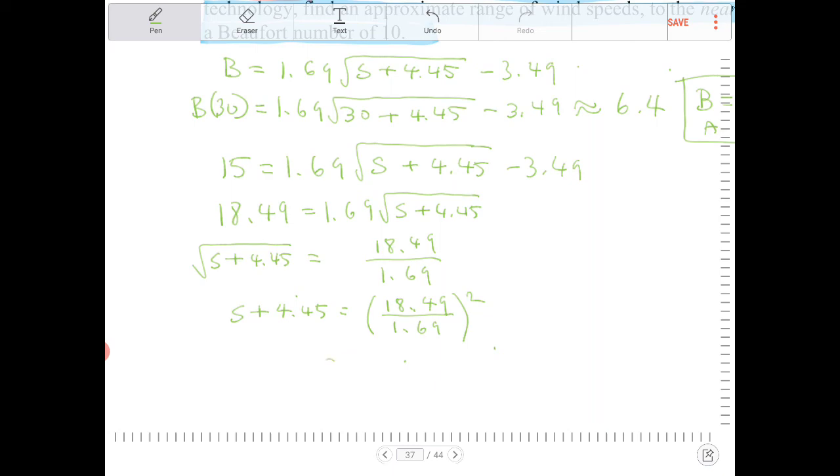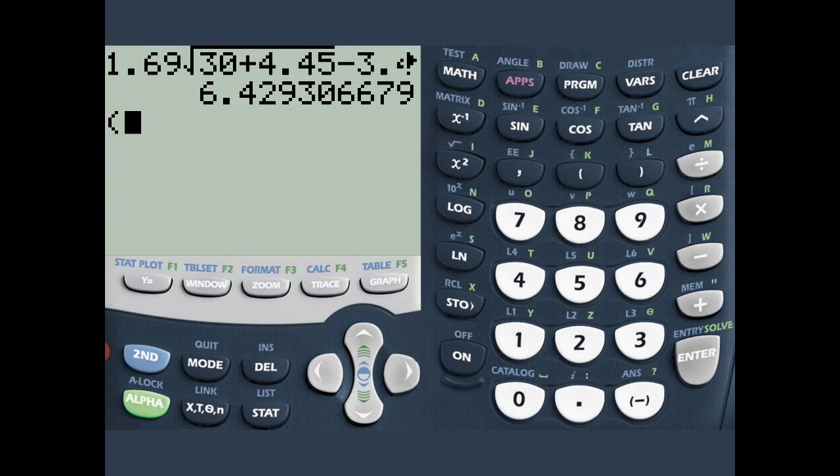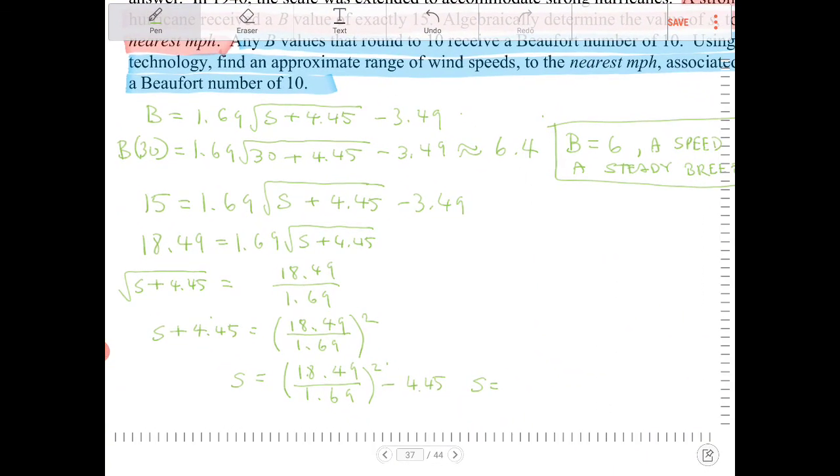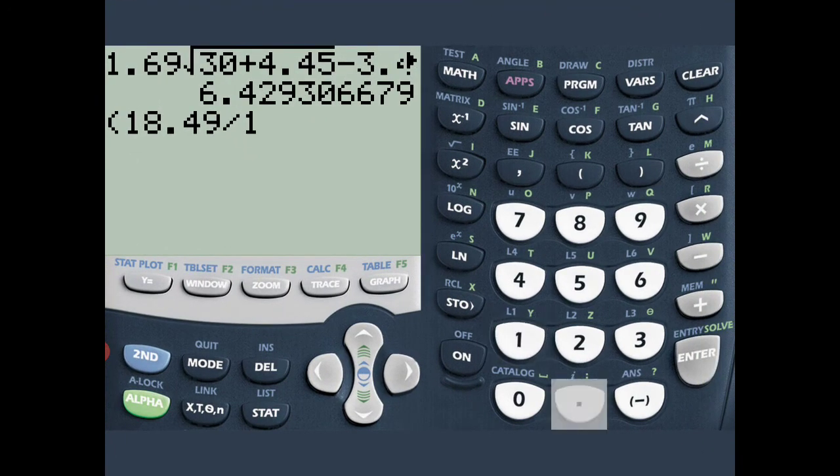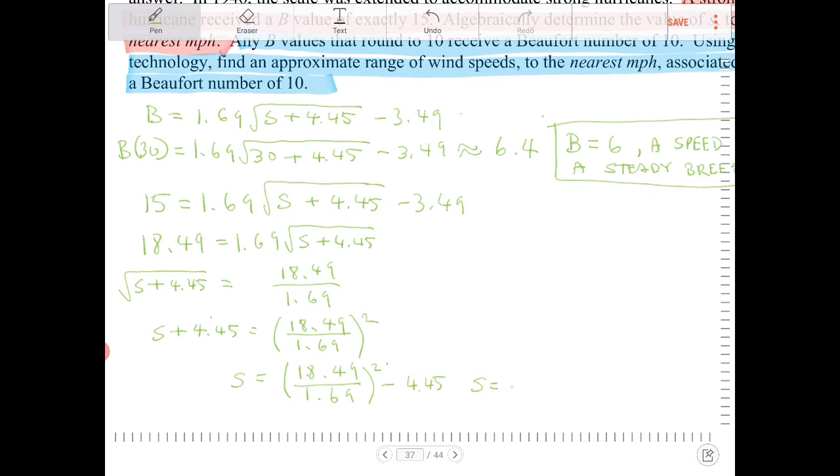So if we square both sides, we'll end up with s plus 4.45 is equal to 18.49 over 1.69 quantity squared. Let's subtract both sides by 4.45, and if we do, we'll end up with 18.49 over 1.69 squared minus 4.45. This will give us a value of s. So 18.49 divided by 1.69 squared, and then minus 4.45. That's 115.25, or because they want us to round to the nearest mile per hour, it's 115 miles per hour.